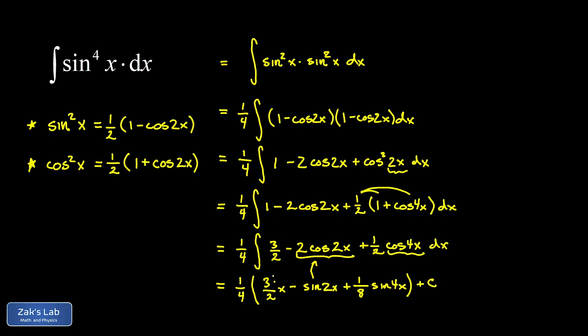Before we call this the final answer, we should probably distribute the one fourth into every one of these terms. This gives me three eighths x minus one fourth sine 2x plus one over 32 sine 4x plus C, and we're done.